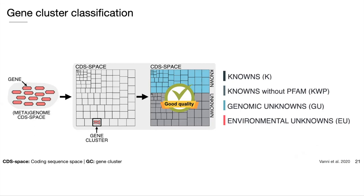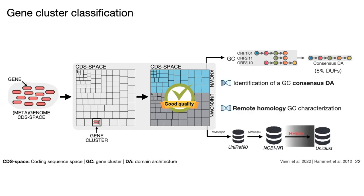Once we had our set of good quality gene clusters, we proceeded with classification into the four categories. We applied two different strategies. For the annotated gene clusters, we identified a consensus domain architecture per cluster, allowing us to divide them into clusters annotated to domains of known function — the known set — and clusters annotated to domains of unknown function, which become part of the genomic unknowns.